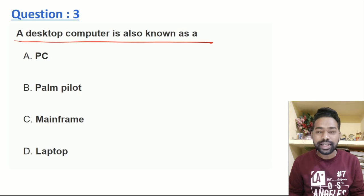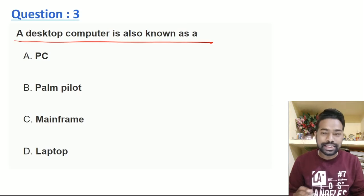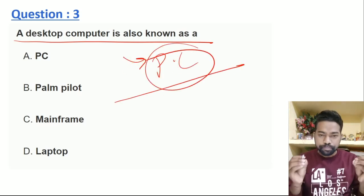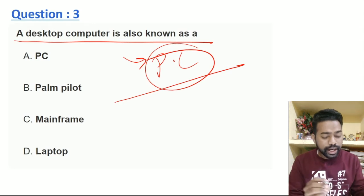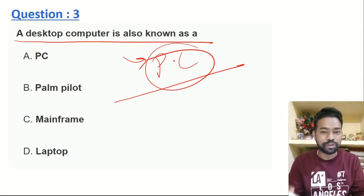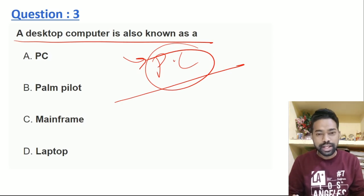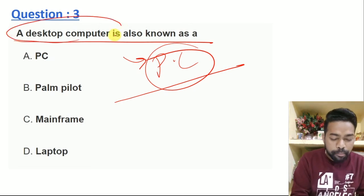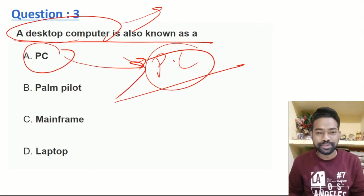The desktop computer is also known as a PC, which is a personal computer. If you recall this, the desktop computer is used. The desktop computer is also known as a laptop. The laptop is very convenient. So the desktop computer is a PC, which is a personal computer.